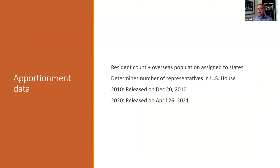The data products started a few weeks ago with a release of the apportionment data, used to determine the number of representatives in the US House for the coming decade and the number of votes in the electoral college. It consists of two numbers for each state: the resident count and the count of overseas population assigned to each state. Because of COVID, all operations were delayed. The decision was made that the quality of the counts took precedence over the timing. The law says these data should have been released before the end of December, but the Census Bureau felt they were not ready to produce quality data at that point in time, and the data was released on April 26th.